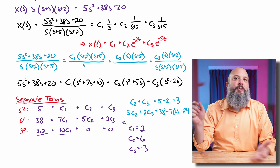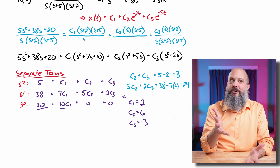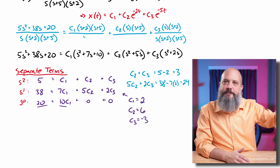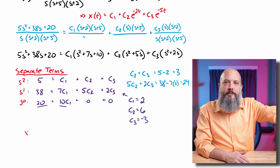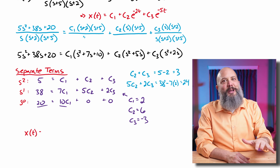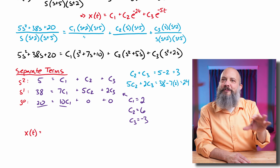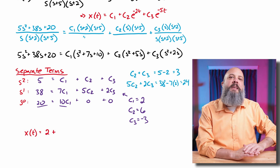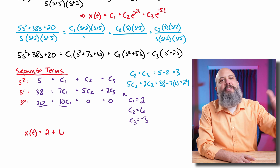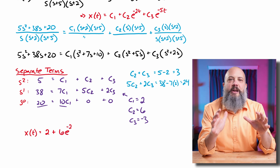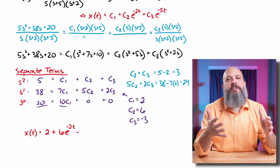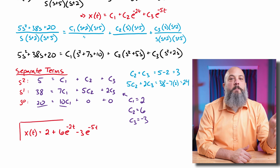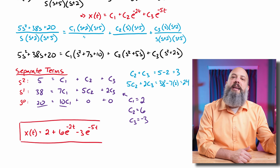I already solved for the inverse Laplace transform earlier — back when I was deciding which fractions to use. You don't want to wait to the very end, because if you solve for a fraction that's not in the table, you'd have to start back at the beginning and redo everything. So I can just plug in these coefficients into the equation I already set up. The final answer for x(t) — the general response — is 2 plus 6e to the minus 2t minus 3e to the minus 5t.